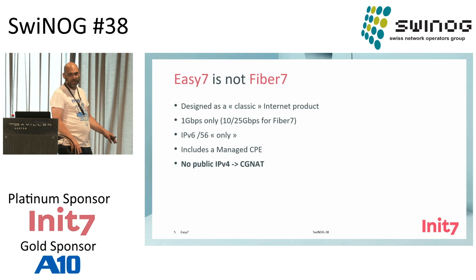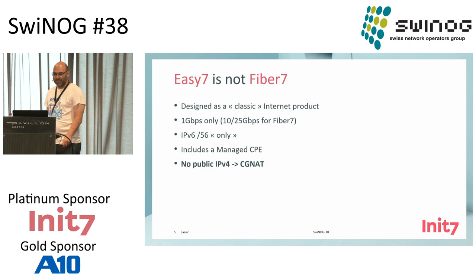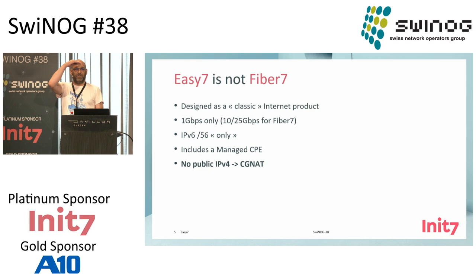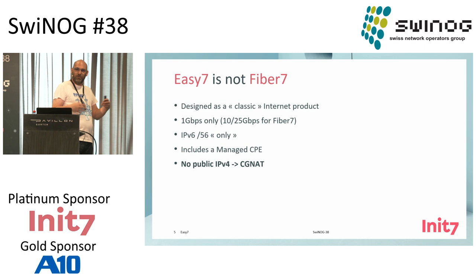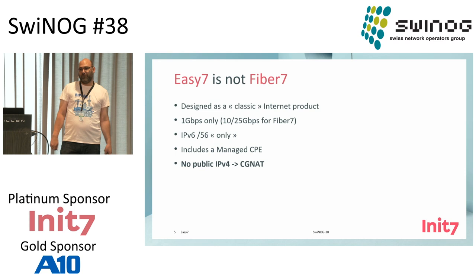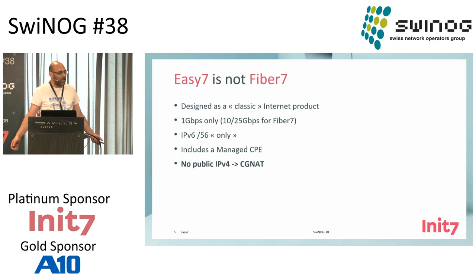EZ7 is not Fiber7. It is designed as a classic internet product. It's only one gigabit, whereas for Fiber7 you can have 10 and 25. You will also only get a slash 56 in IPv6. We give slash 48 to everyone on Fiber7. And it includes a managed CPE, which is completely the opposite of what we do on Fiber7, where you have complete freedom of your CPE. And you don't have a public v4.